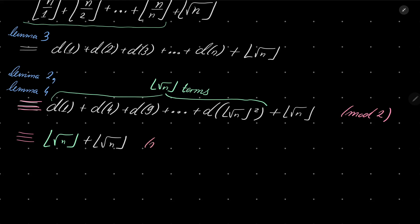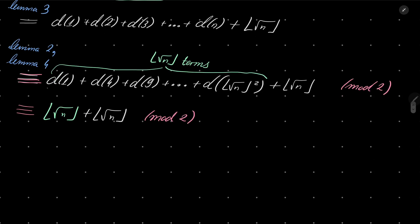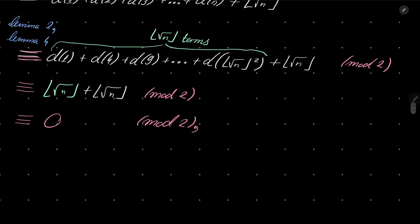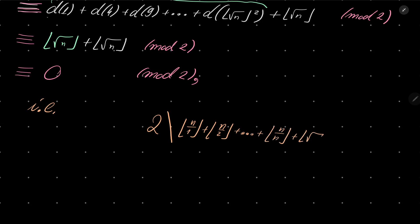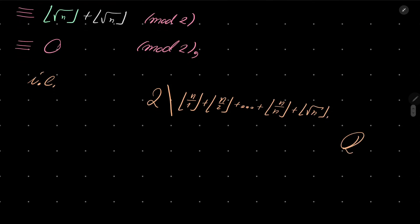This number is obviously even because we have two equal numbers added together. So it is congruent to 0 modulo 2 — that is, 2 indeed divides floor of n over 1 plus floor of n over 2 plus dot dot dot plus floor of n over n plus floor of square root of n. That closes our proof. As you have seen, the majority of my reasoning was dedicated to proving the four lemmas. Thank you very much for watching. I will see you next time. Goodbye.